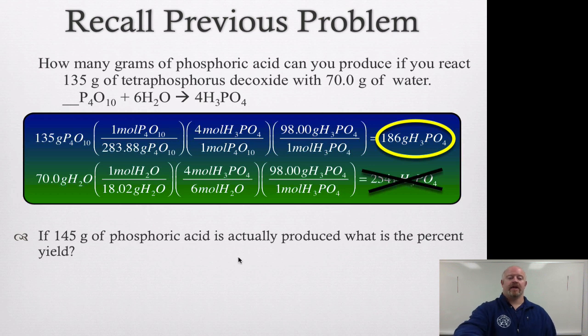Now what happens if we run the experiment and 145 grams of phosphoric acid is actually produced? So we're supposed to make 186 grams. How much would we get? What is our percent yield if we really made 145 grams of that process? So in this thing, what we're gonna do, we know what we should have gotten versus what we really did do. So let's go to the board and work it out real quick.